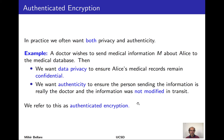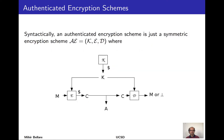In the symmetric setting, the primitive that simultaneously provides both privacy and integrity of data is called an authenticated encryption scheme. We'll approach this the same way we've approached all our primitives: start with the syntax, then define a security goal using games, and then look at schemes.